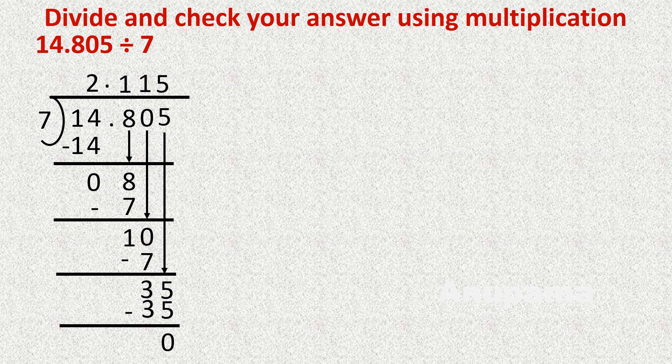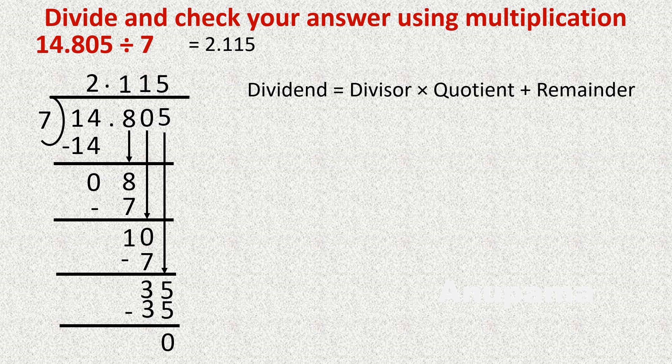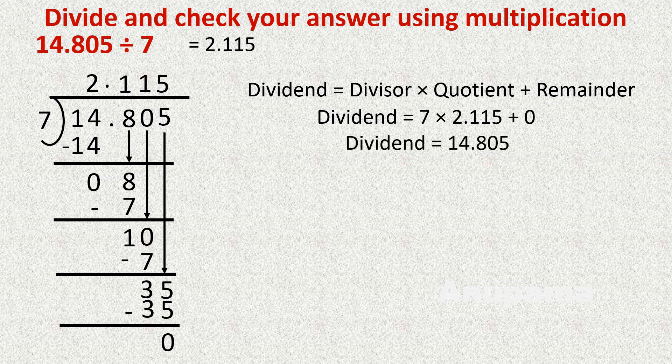Now, how do we check our division? A simple rule: dividend equals divisor multiplied by quotient plus remainder — this is the division algorithm. So we write 7 multiplied by 2.115 plus 0. When we multiply 2.115 by 7 we get 14.805, which equals the dividend. This means our division is correct.